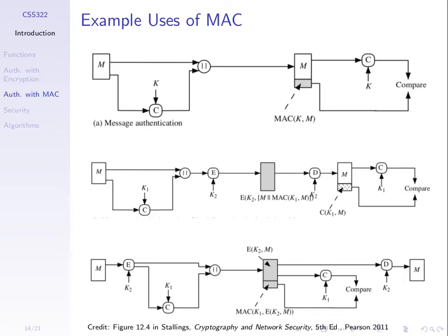The nature of the MAC algorithm should be such that two different input messages with the same key will produce different outputs — different tags. So if the message is the same as the original, we'll get the original tag back, and that's how verification takes place.